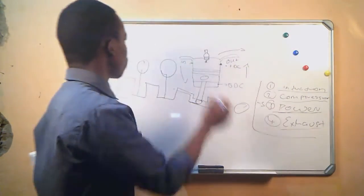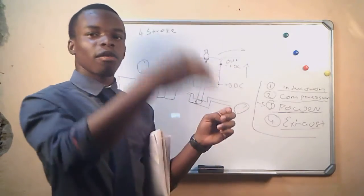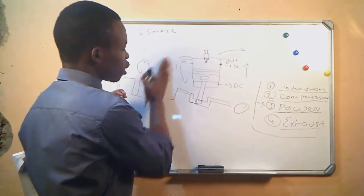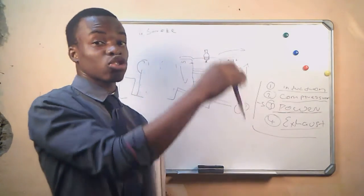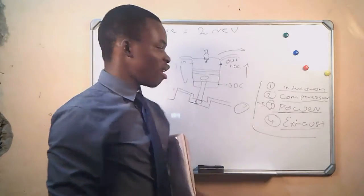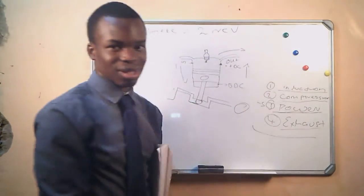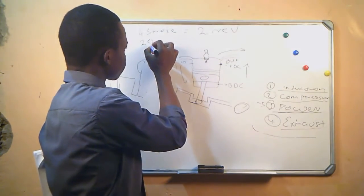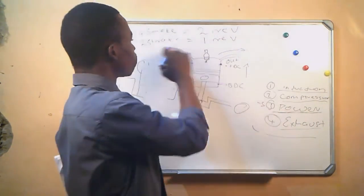This is what we call a four-stroke engine, because the piston moved four times before all processes were complete, and it took two revolutions of the crankshaft for this process to be completed. The first revolution covers induction and compression; the second revolution covers power stroke and exhaust stroke. For a four-stroke engine, it takes two crankshaft revolutions. We also have an engine that completes all four strokes in just two strokes — we call that a two-stroke engine, and it takes only one revolution for the crankshaft to complete all these.